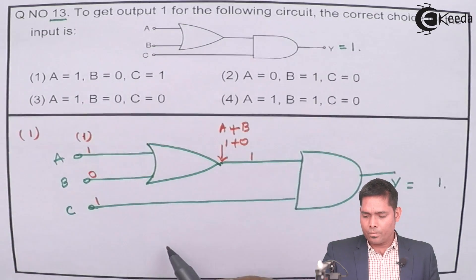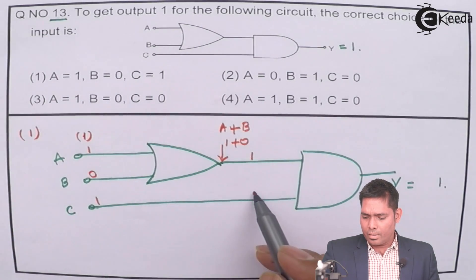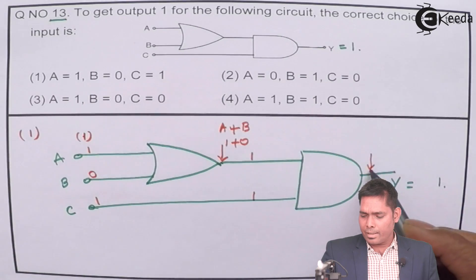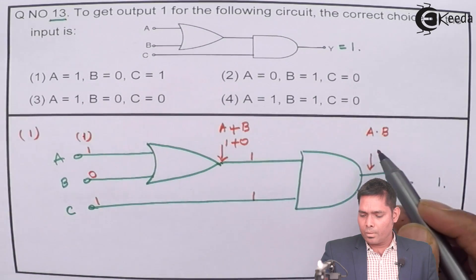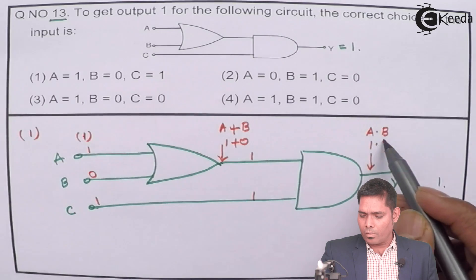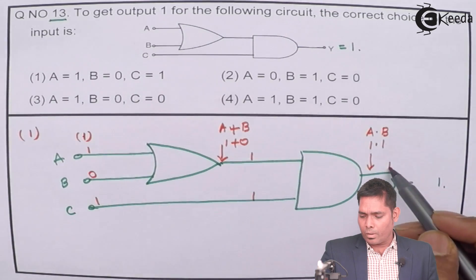So 1 is fed to this. This is the AND gate, and the AND gate operation is A dot B. This is 1, 1, and the output is 1. That is correct.